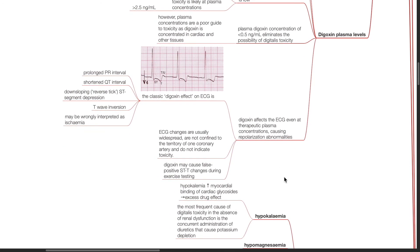Digoxin affects the ECG even at therapeutic plasma concentrations, causing repolarisation abnormalities. The classic digoxin effect on ECG has been discussed. ECG changes are usually widespread and are not confined to the territory of one coronary artery and do not indicate toxicity. Digoxin may cause false positive ST changes during exercise testing.